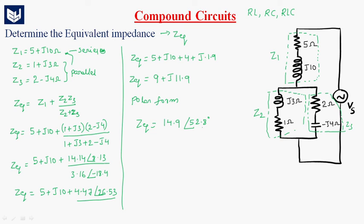So what is this 52.8 degrees? 52.8 degrees is the phase angle difference or phase difference between voltage and current.